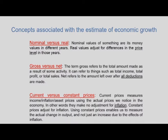The term 'gross' refers to the total amount made as a result of some activity — total income, sales or profit. 'Net' refers to the amount left over after all deductions, which in national income accounts typically means depreciation. Current prices measure income or asset prices using actual prices in the economy with no adjustment for inflation. Constant prices adjust for inflation, enabling us to measure the actual change in output rather than just an increase due to price effects.